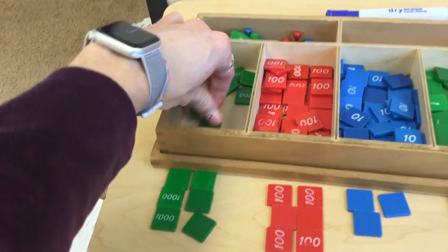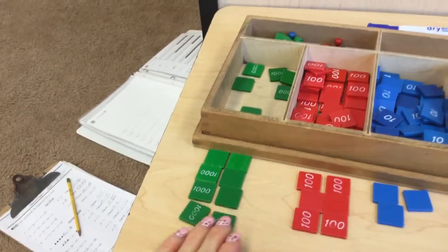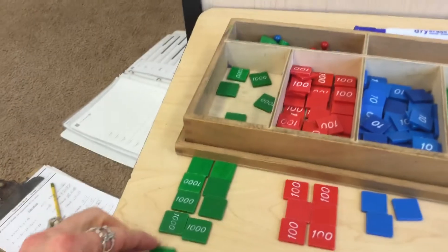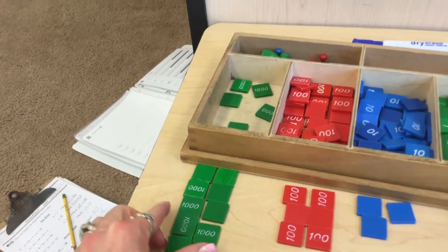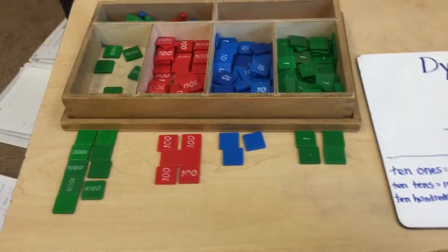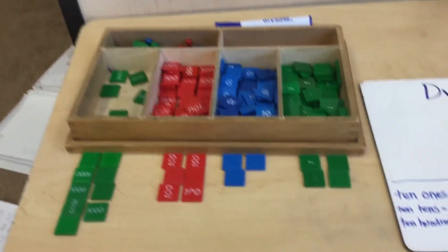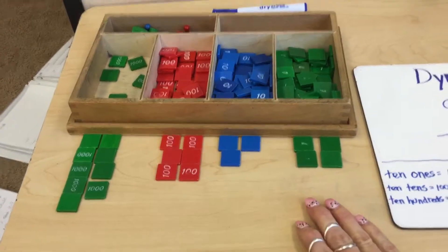And then I'm going with my nine thousands. With subtraction we always start with the biggest number. But then we always start in the ones.